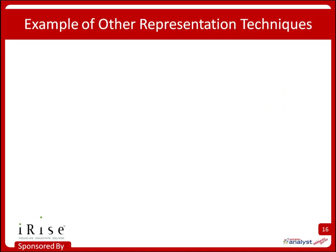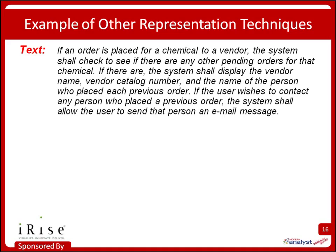Let me give examples of how alternative representations are valuable. Complex Boolean logic offers many opportunities for ambiguity and missing requirements. Here's a sample requirement written in text: if an order is placed for a chemical to a vendor, the system shall check for any other pending orders for that chemical. If there are, display the vendor name, catalog number, and name of the person who placed previous orders. If the user wishes to contact a previous requester, allow sending an email. This is hard to read, hard to see if all outcomes of all if-then branches are specified, and else conditions are often overlooked.